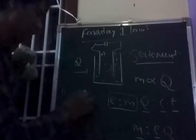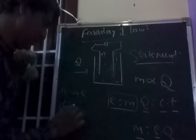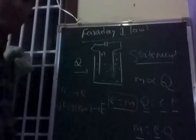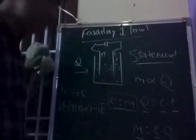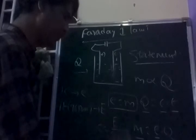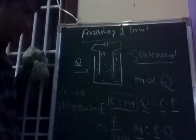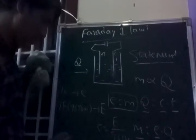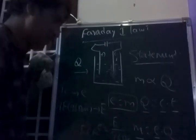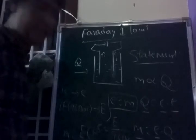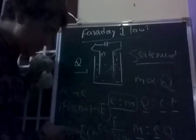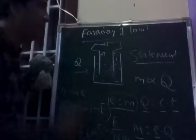If one coulomb is passed, mass deposited equals small e. If one Faraday (96500 coulombs) is passed, the deposited mass equals capital E, the chemical equivalent. The relation is: e = E / 96500. Therefore, M = (E × C × T) / 96500. The chemical equivalent E = atomic mass / valency = M/Z. This is Faraday's first law.